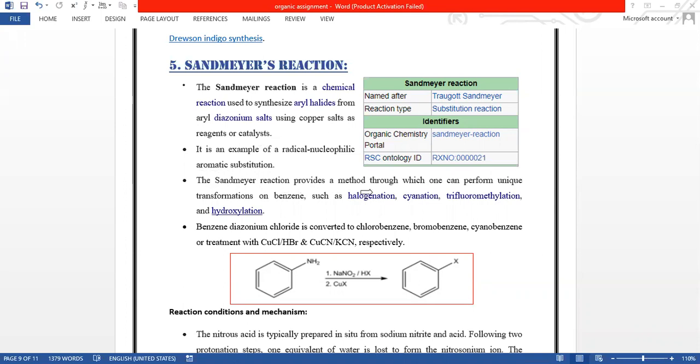The Sandmeyer's Reaction provides a method through which one can perform a unique transformation on benzene, such as halogenation, cyanation, trifluoromethylation, and hydroxylation. Benzene diazonium chloride is converted to chlorobenzene, bromobenzene, cyanobenzene, or treatment with copper chloride, hydrogen bromide, and copper cyanide and potassium cyanide respectively.